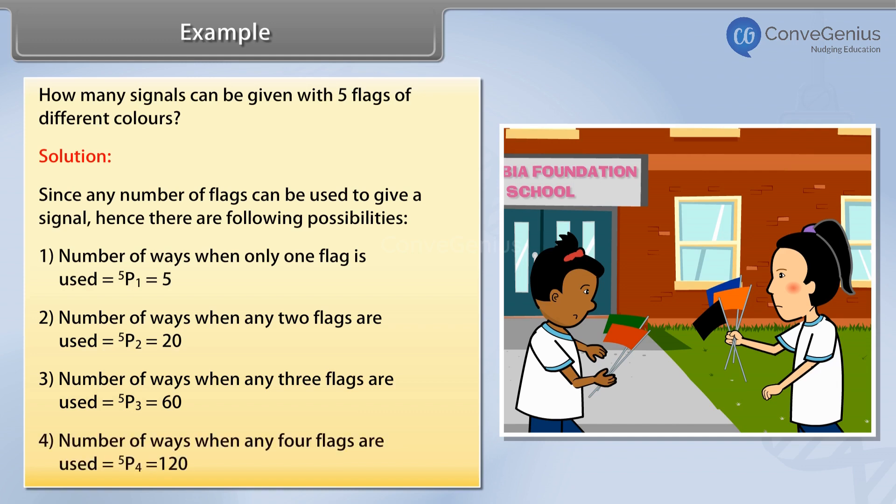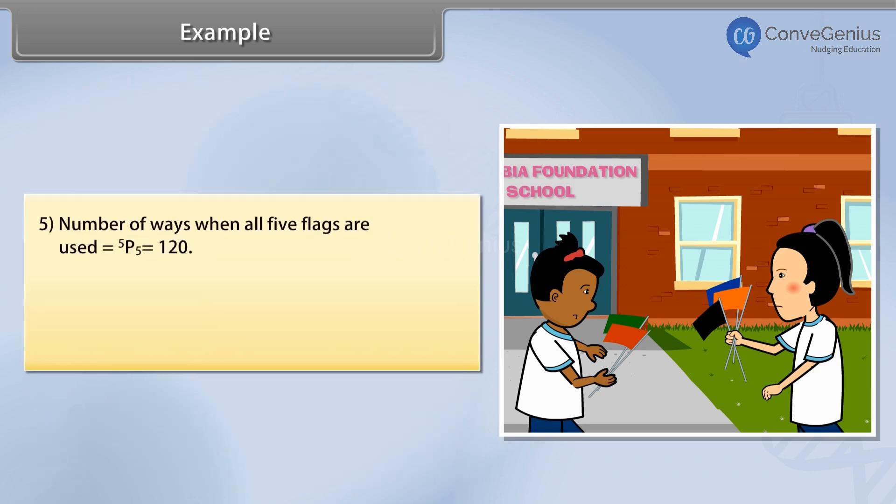4. Number of ways when any four flags are used is equal to 5P4 = 120. 5. Number of ways when all five flags are used is equal to 5P5 = 120.